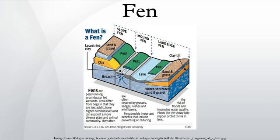Vegetation Carr is the northern European equivalent of the wooded swamp of the southeastern United States, also known in the United Kingdom as wet woodland. It is a fen overgrown with generally small trees of species such as willow or alder.